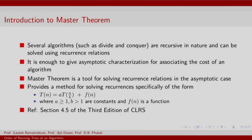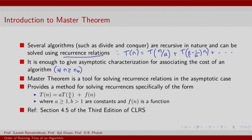We will next discuss a very important theorem useful for proving several recurrence relations. Several algorithms such as divide and conquer are recursive in nature, so recurrence relations become very natural for expressing time complexity. This means T(n) can be expressed as T(n/a) + T((1 - 1/a) * n) + something, and so on. It is enough to give an asymptotic characterization. We do not need T(n) for small values of n — as long as we characterize the recurrence for n >= n_naught, we are fine. The master theorem provides such a tool.